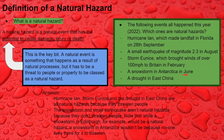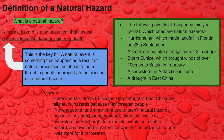A snowstorm in Antarctica doesn't really have the potential to cause damage, injury or death unless you're told it's near a research station — and then it does. The others were deduced by location. But the earthquake of magnitude 2.3 — that information tells us the earthquake was too small to be felt, 2.3 on the Richter scale, which means it doesn't have the potential to cause damage, injury or death.